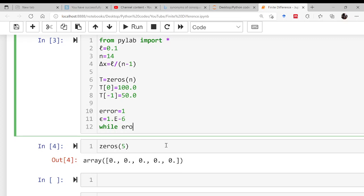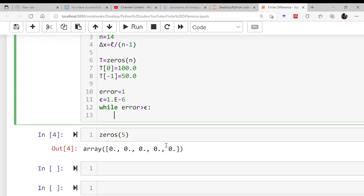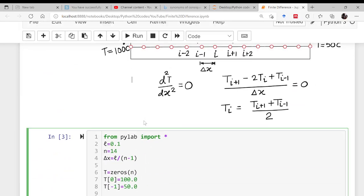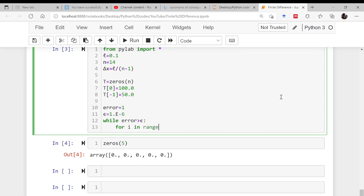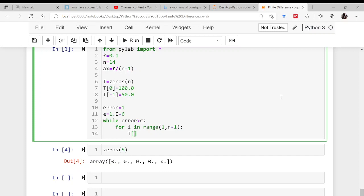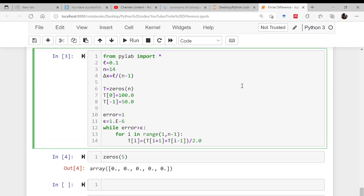Now, start. While this error is more than epsilon, then what I will be saying? For each and every node, I have to move from here—because this is already known to me—till here. For that matter, I have to use the loop: for i in range(1, n-1). And then what I have to do is find ti, that is ti = (ti+1 + ti-1) / 2. That's it.